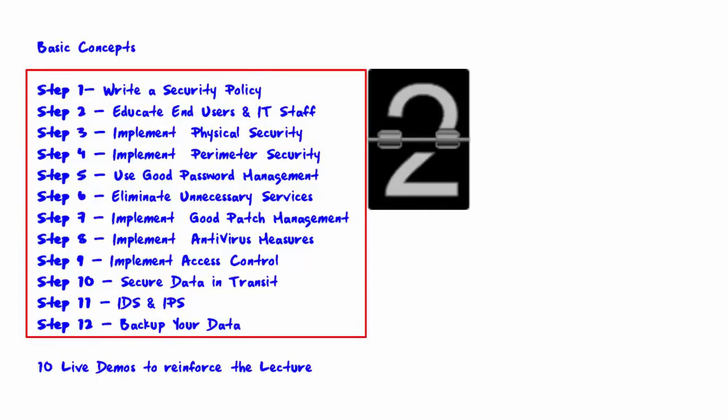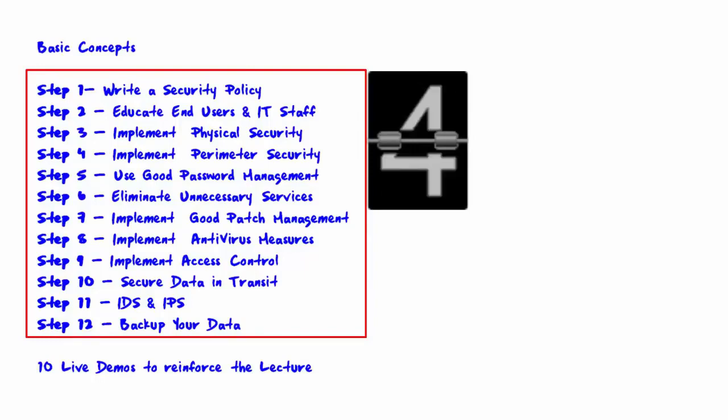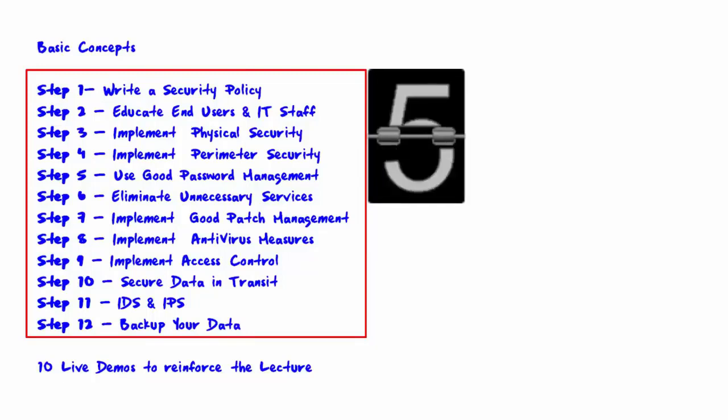educate end users and IT staff. Step three: implement physical security. Step four: implement perimeter security. Step five: use good password management.